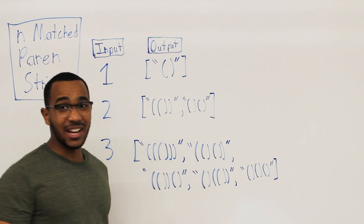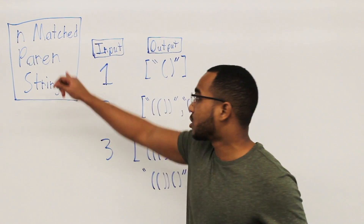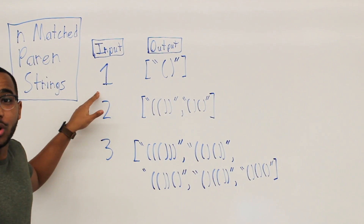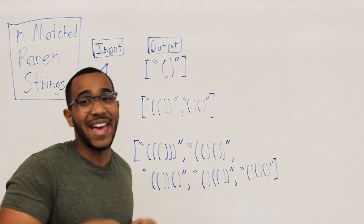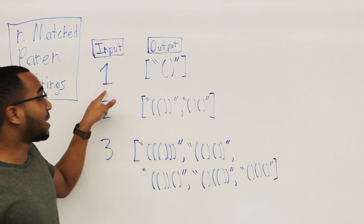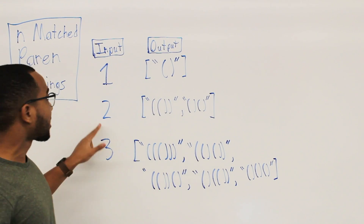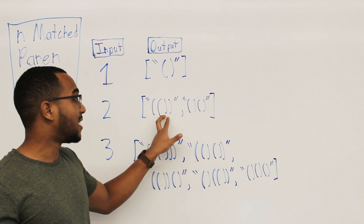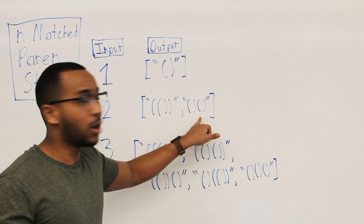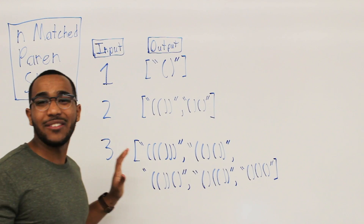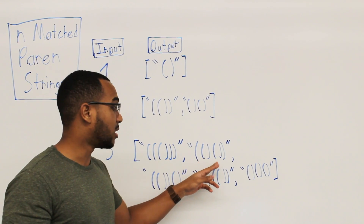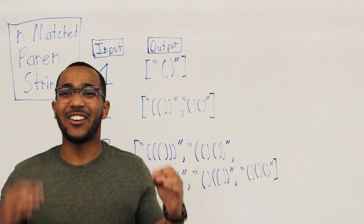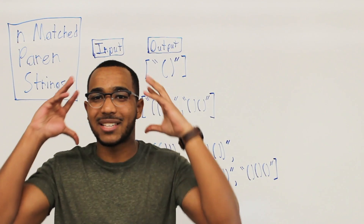Today's video is about the N matched parentheses problem. It really expresses the fundamentals of recursion. Our input is a number N — the number of open brackets we need to generate. We generate all parentheses with N open brackets and N closed brackets. If N is 1, we have one open and one close. If N is 2, there are two possibilities. If N is 3, there are even more possibilities — the possibilities scale exponentially.